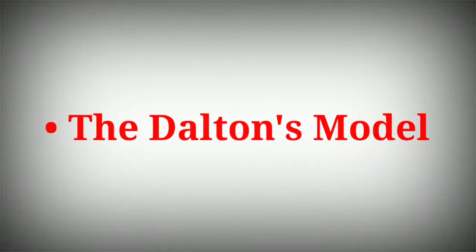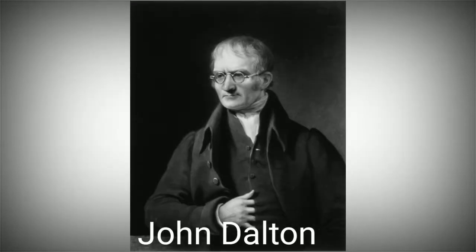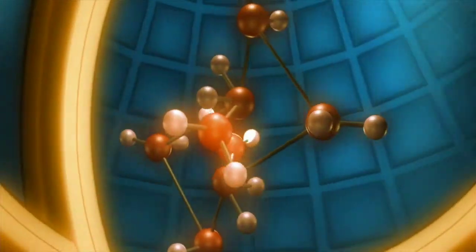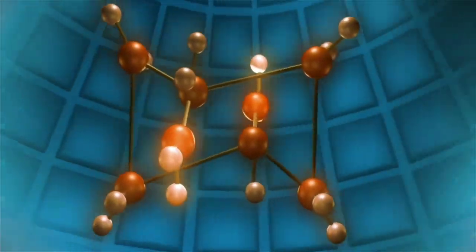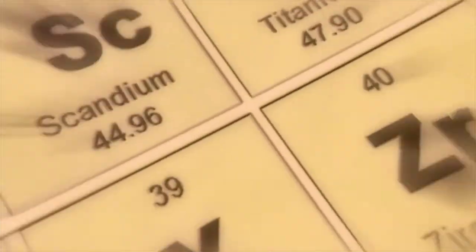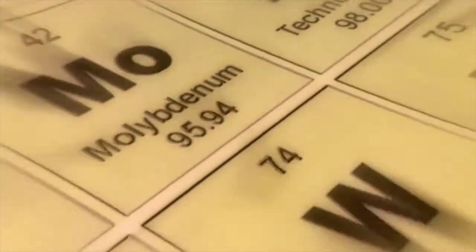Dalton's model: After a long time, in 1803, the British scientist gave the atomic theory, which is called atomic theory of Dalton. According to this theory, all substances are made of very tiny and indivisible particles called atoms. The atoms of different elements are different in mass and size, and atoms of the same element are identical.